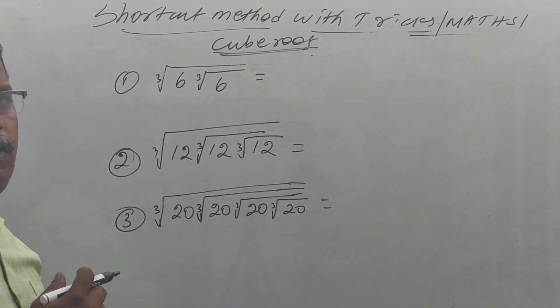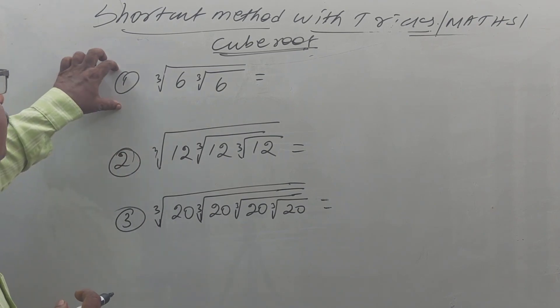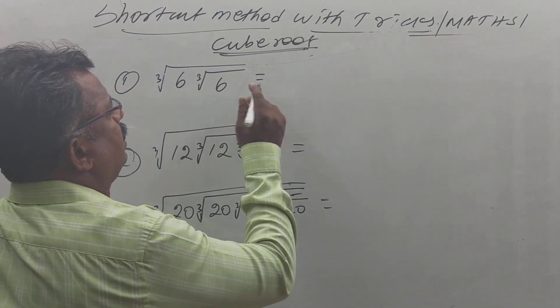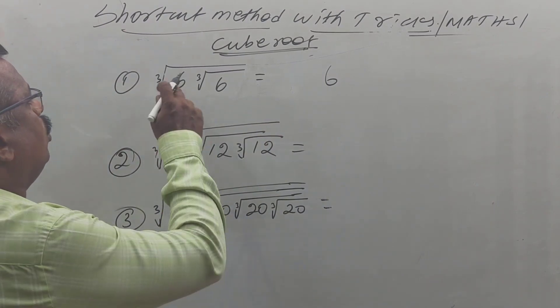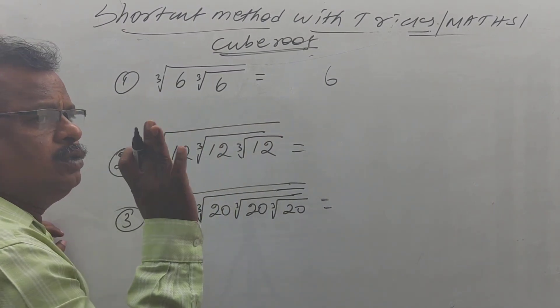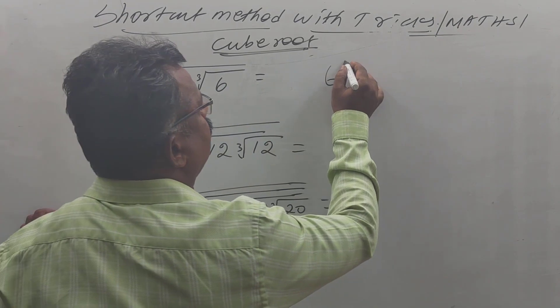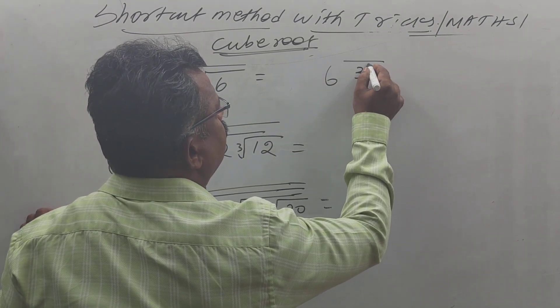How to find out the value of the first example? Firstly, you should write 6. How many cube roots are available? Two cube roots are available. Then 3 power 2.